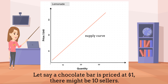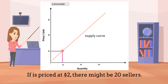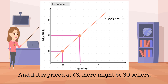Let's say a chocolate bar is priced at $1, there might be 10 sellers. If it is priced at $2, there might be 20 sellers. And if it is priced at $3, there might be 30 sellers.